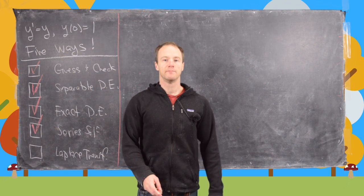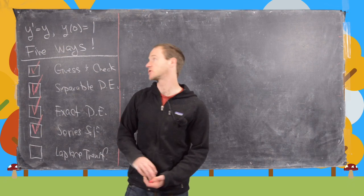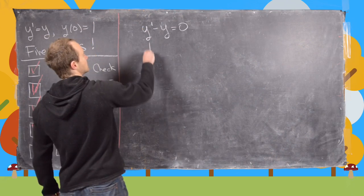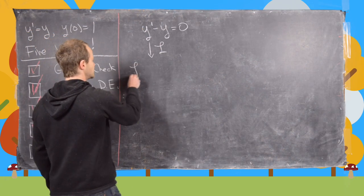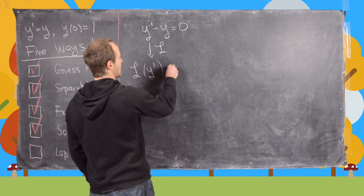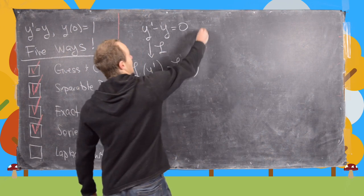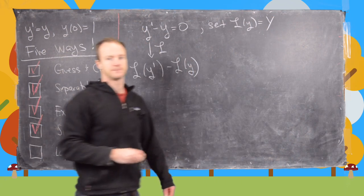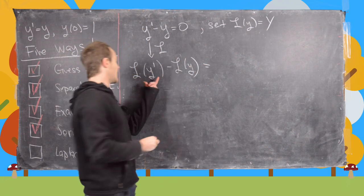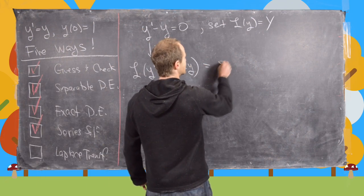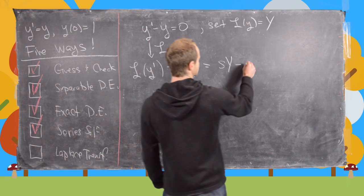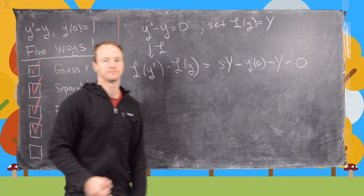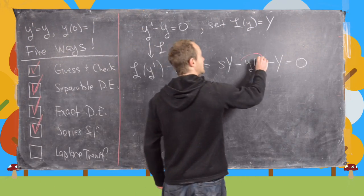Now for our final method: solving this differential equation using a Laplace transform. Writing it as y prime minus y equals 0 and taking the Laplace transform of both sides, we get the Laplace transform of y prime minus the Laplace transform of y equals 0. Setting the Laplace transform of y equal to capital Y, the derivative rule gives us s times Y minus y(0) minus Y equals 0. By our initial condition, y(0) equals 1.